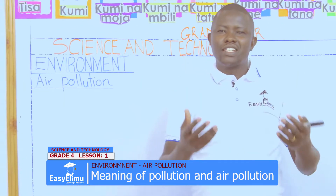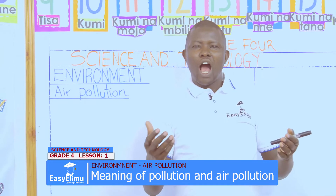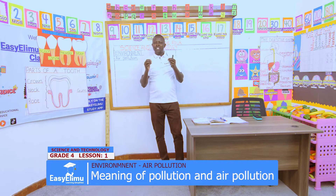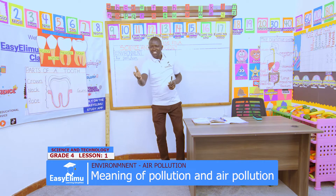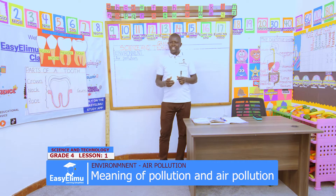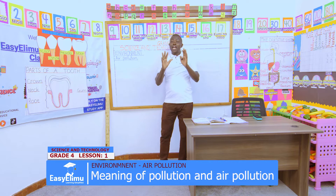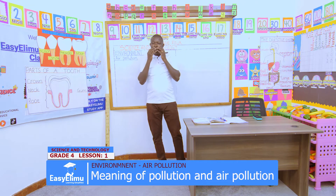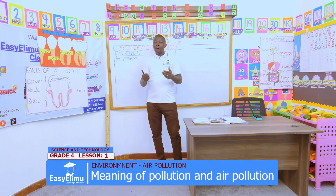Before we continue with our lesson today, let us rewind on our previous lesson on teeth. How many teeth does an adult person have? John? We said 32 teeth — correct. An adult has 32 teeth. And we said we have how many types of teeth in our mouth, Victoria? We have four types of teeth.